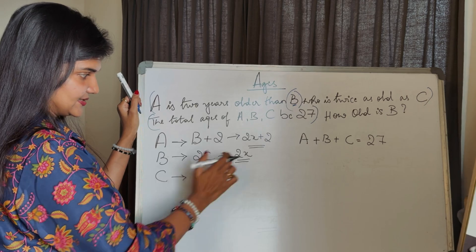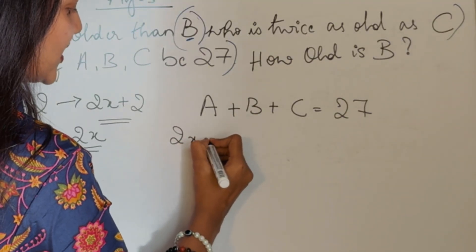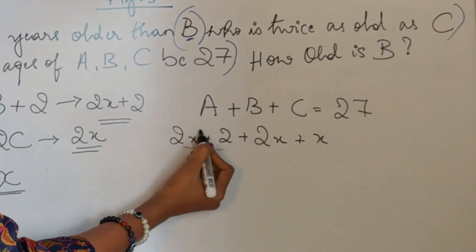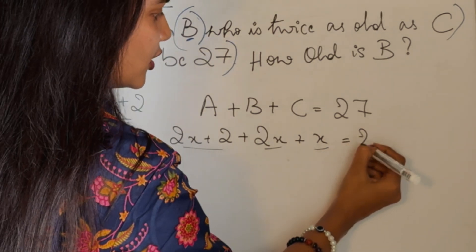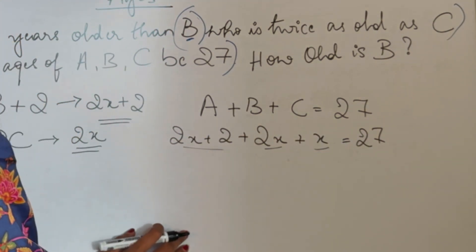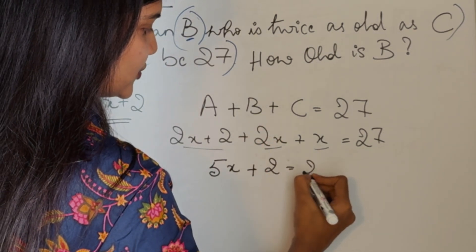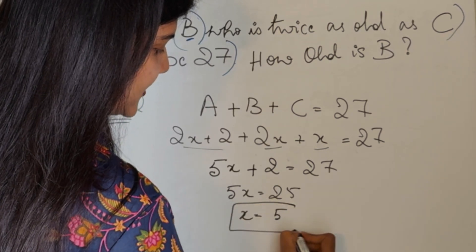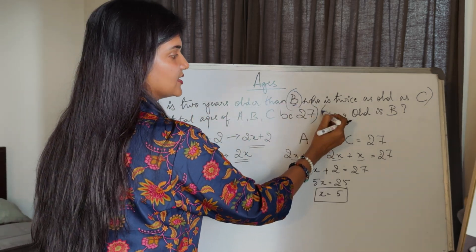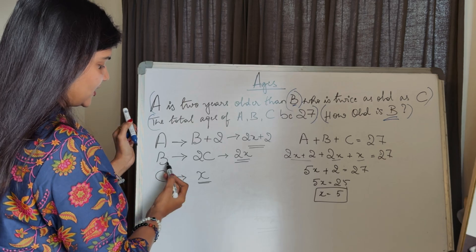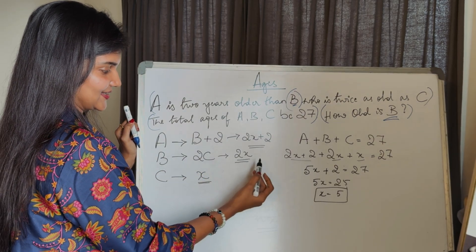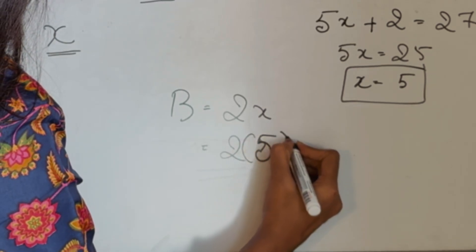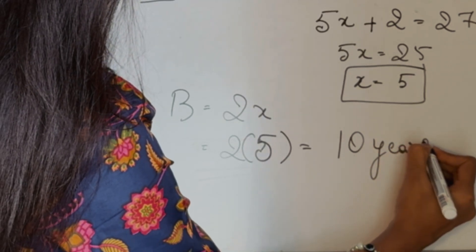The total ages of A, B, C is 27. So A plus B plus C equals 27. We already know the values: 2X plus 2 plus 2X plus X. That's 5X plus 2 equals 27. So 5X equals 25, X equals 5. We got the X value, but they asked how old is B. B value is equal to 2X. X is 5, so B value is 10 years.